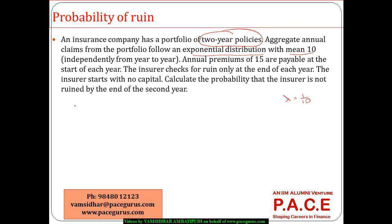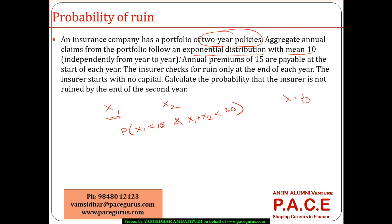We want to calculate the probability that the insurer is not ruined. Let X1 be the annual claim amount in the first year and X2 be the claim amount in the second year. For the insurer to not be ruined, in the first year X1 must be less than 15, and at the end of the second year X1 plus X2 must be less than 30. Both conditions must occur.